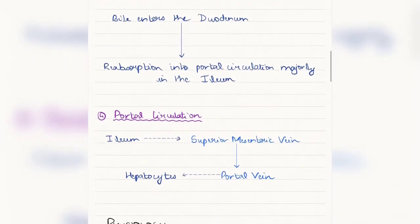The gallbladder in this circulation is just a site for storage and concentration of bile. Next is the intestine. In the intestine, bile enters the duodenum, in the second part of the duodenum.